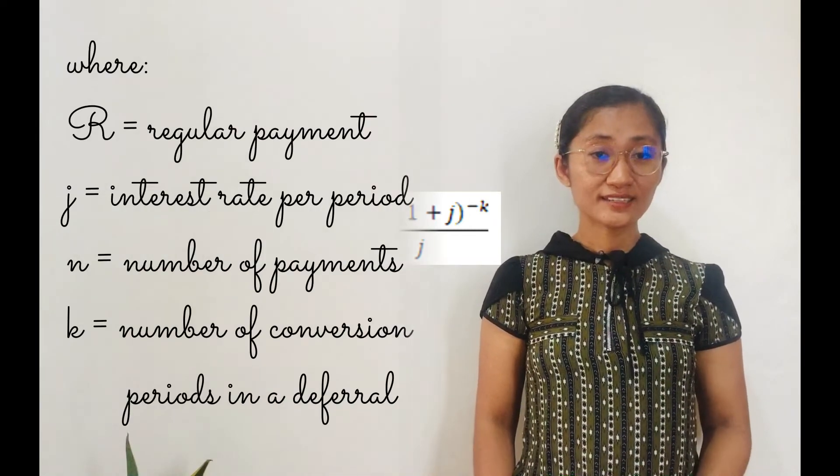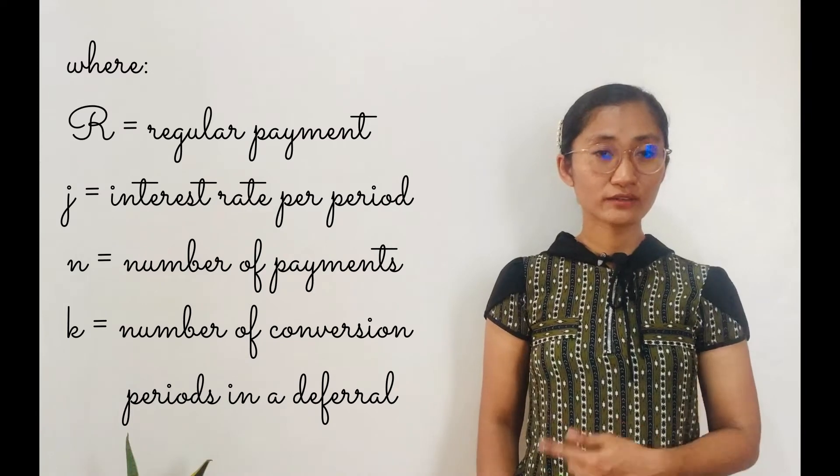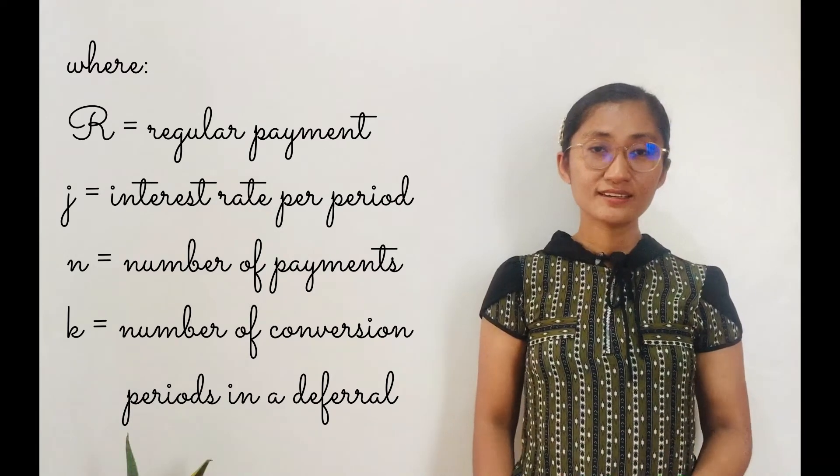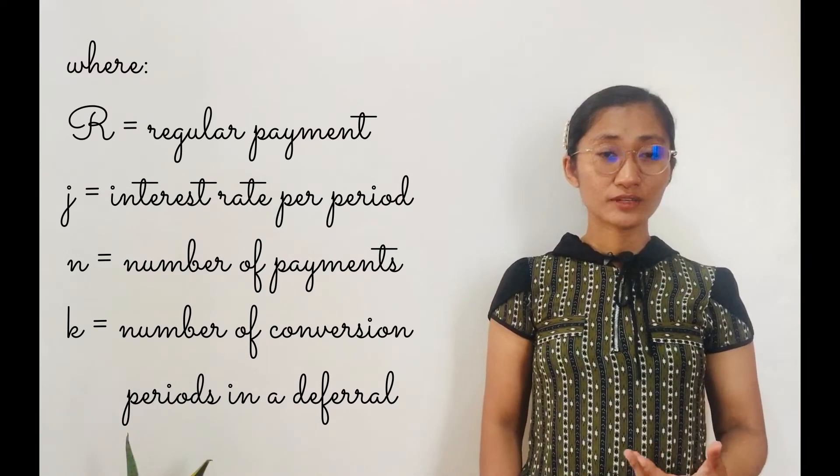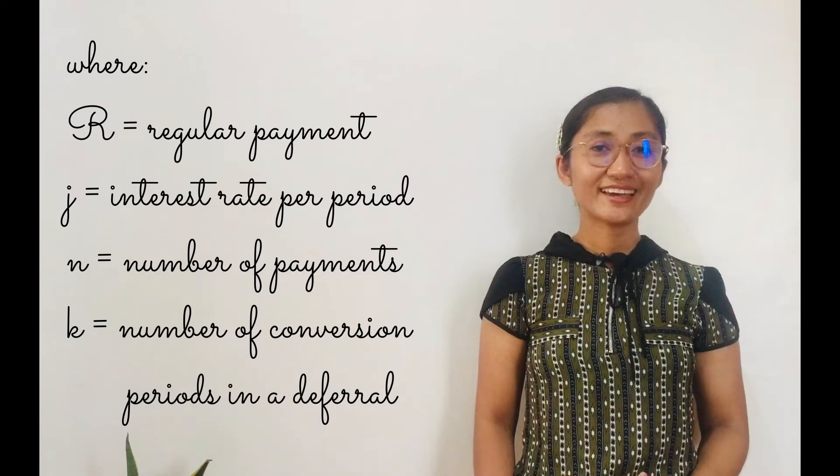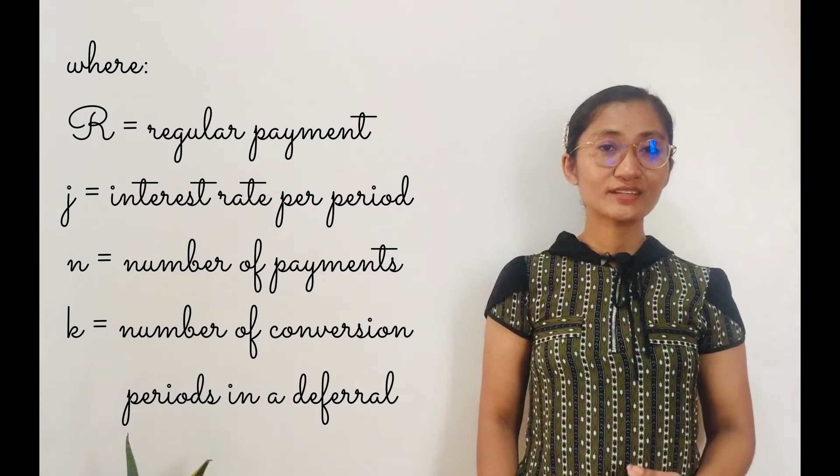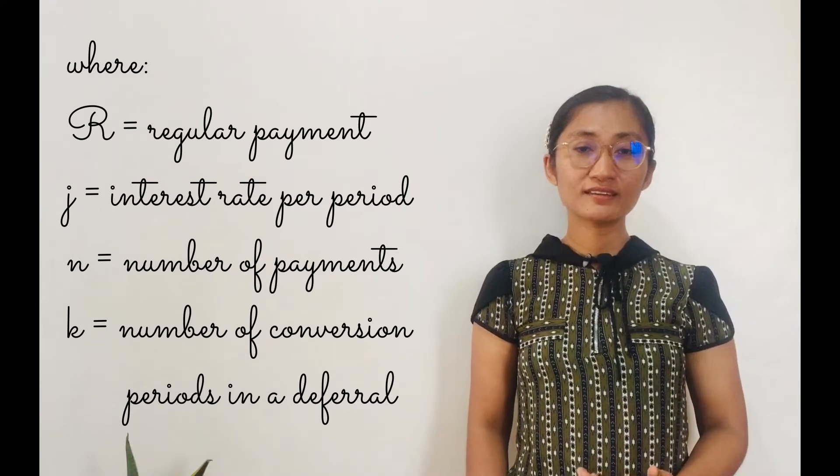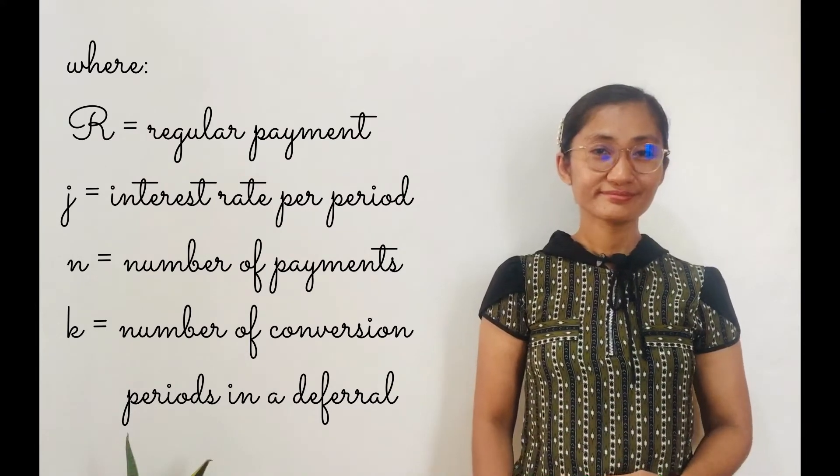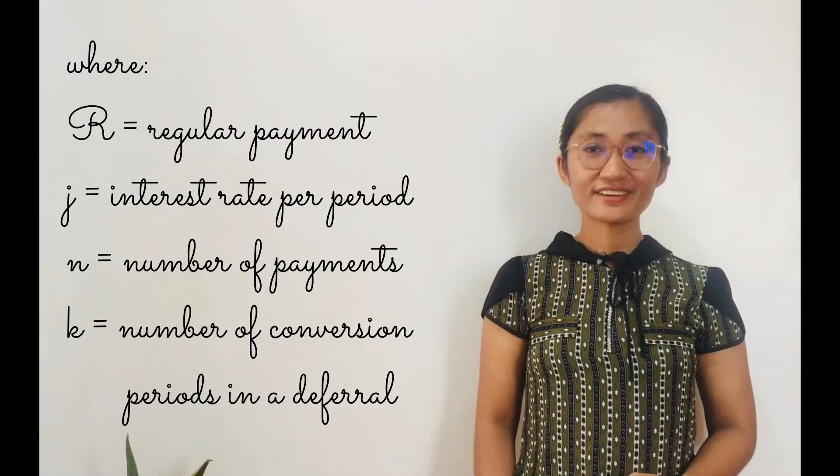Where R refers to regular payment. J is the interest rate per period. N is the number of payments or actual payments. And K is the number of conversion periods in a deferral. So let us have examples.